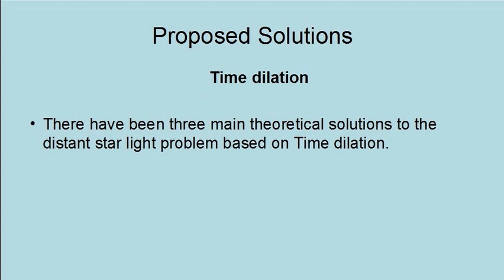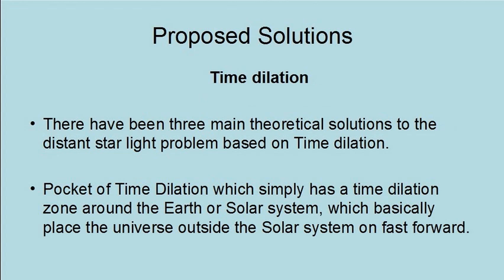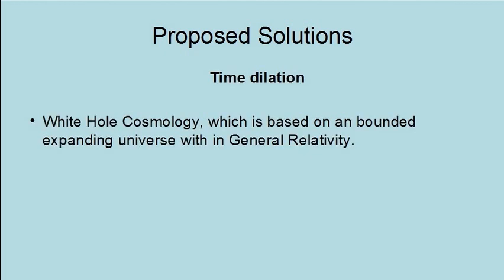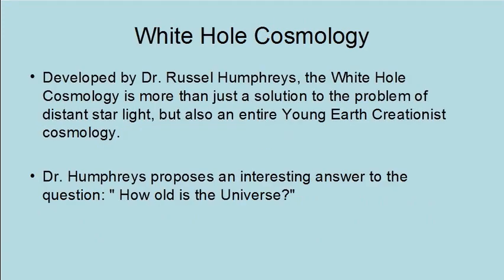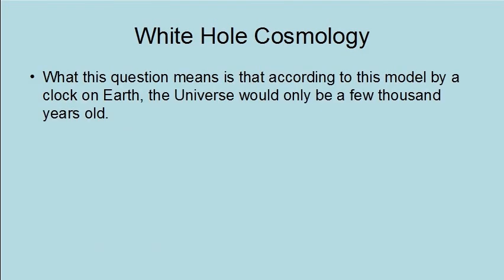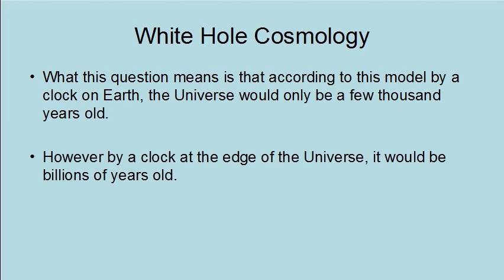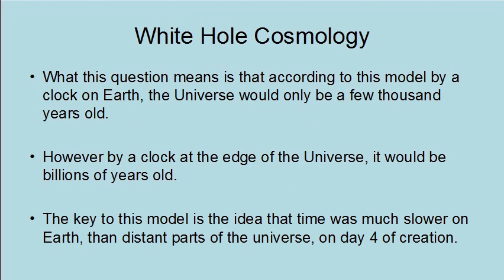Time dilation. There have been three main theoretical solutions to the distant starlight problem based on time dilation: a pocket of time dilation, which simply has a time dilation zone around the Earth or solar system, placing the universe outside the solar system on fast forward; the Whitcomb cosmology, based on a bounded, expanding universe within general relativity; and cosmological relativity, which, while not developed for solving the distant starlight problem, provides a solution when applied to a rapidly expanded, bounded universe. Dr. Russell Humphreys proposes an interesting answer to the question of how old the universe is — the answer is, by what clock? According to this model, by a clock on Earth the universe would only be a few thousand years old, but by a clock at the edge of the universe it would be billions of years old. The key is that time was much slower on Earth than in distant parts of the universe on day four of creation.